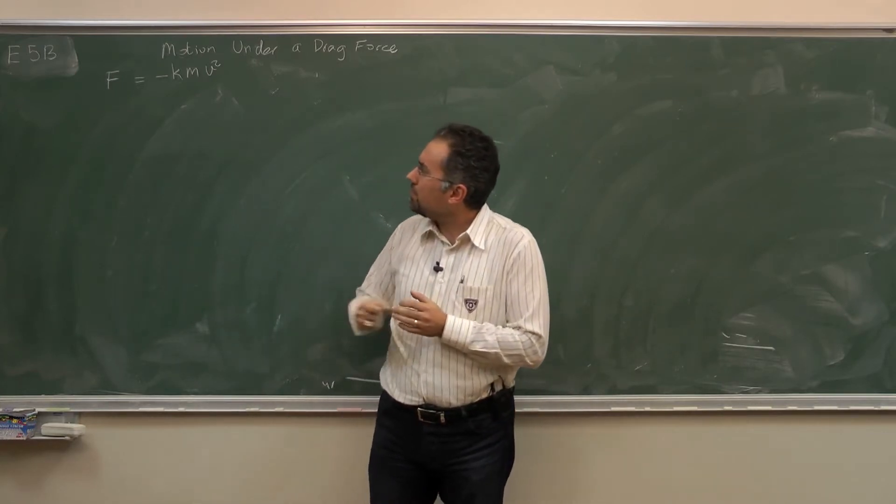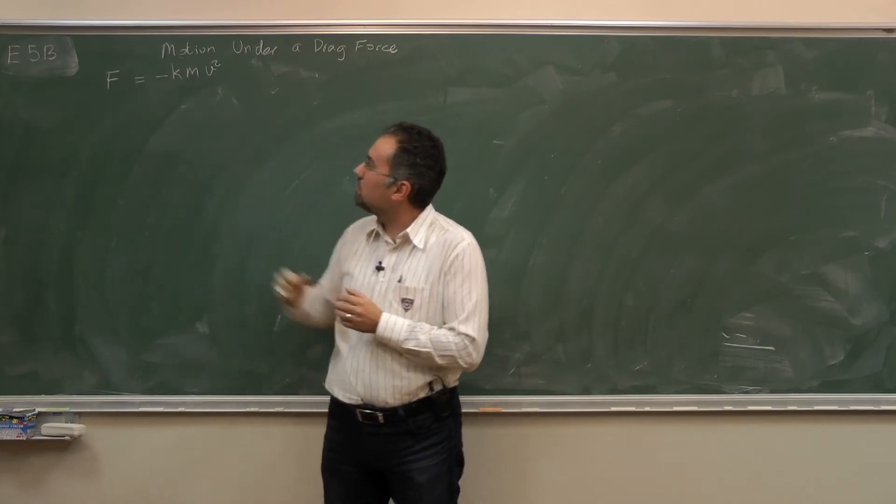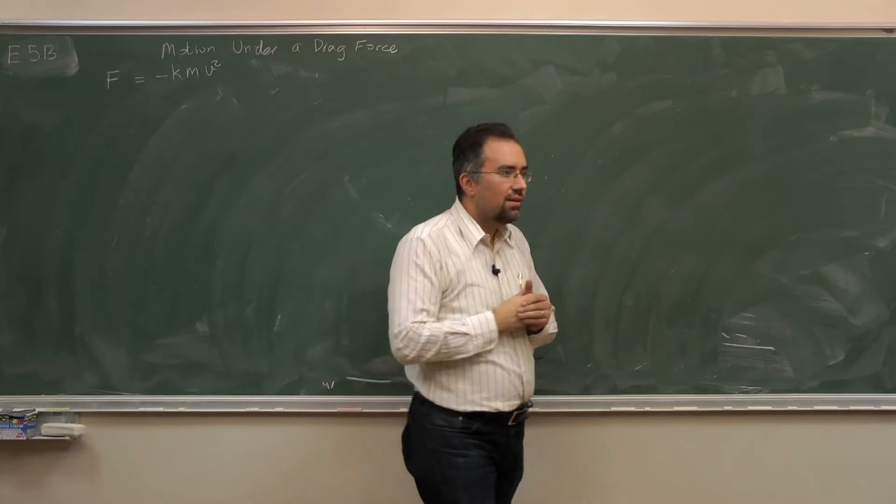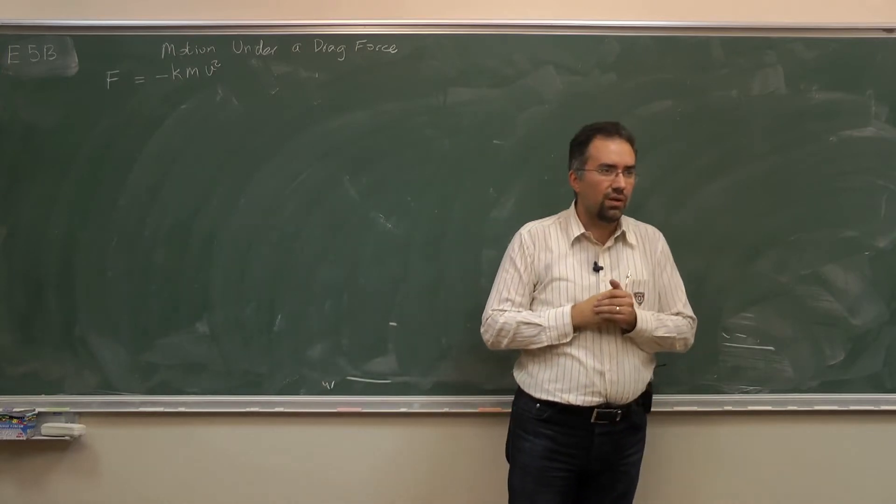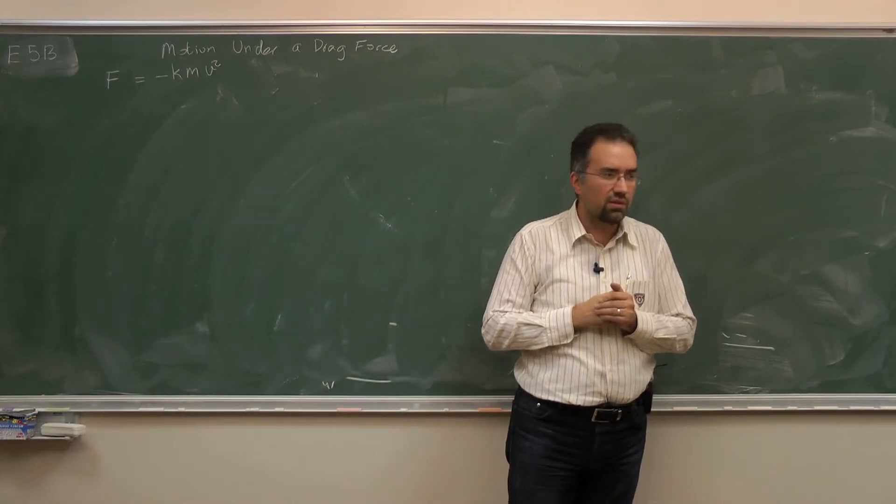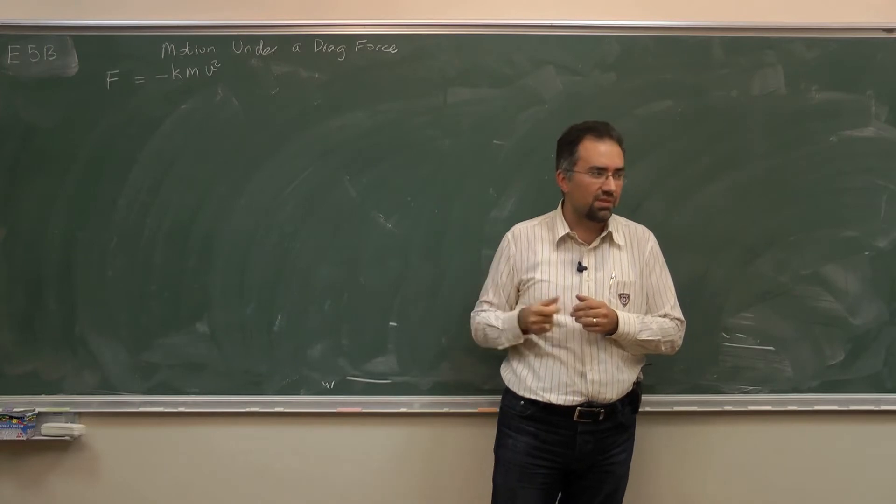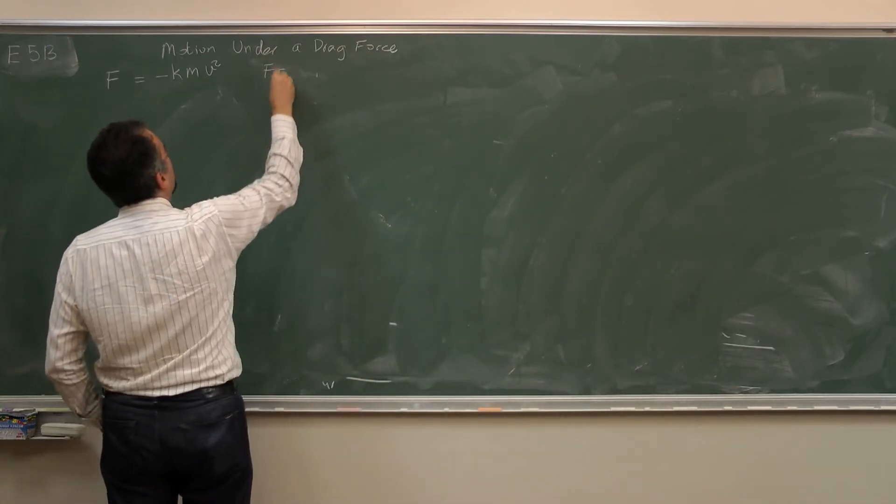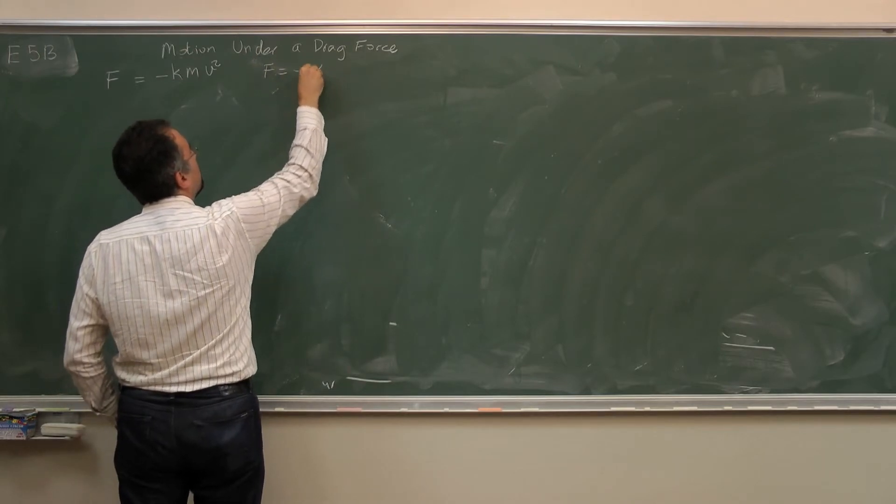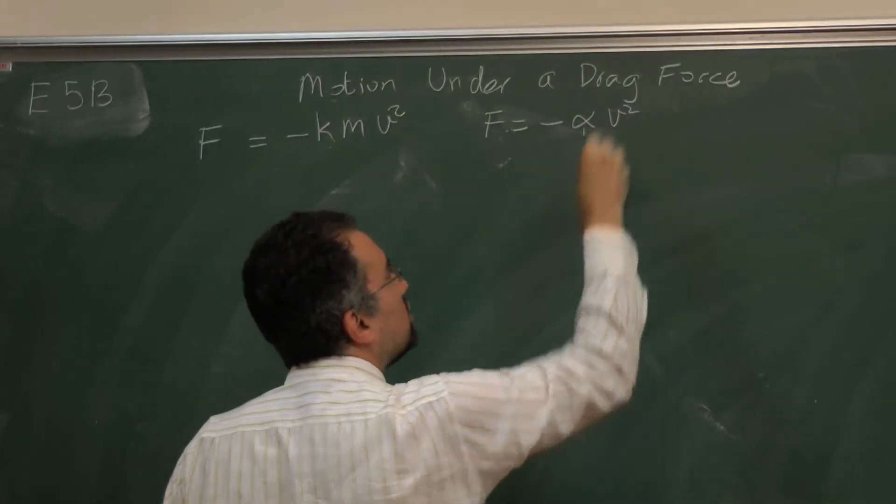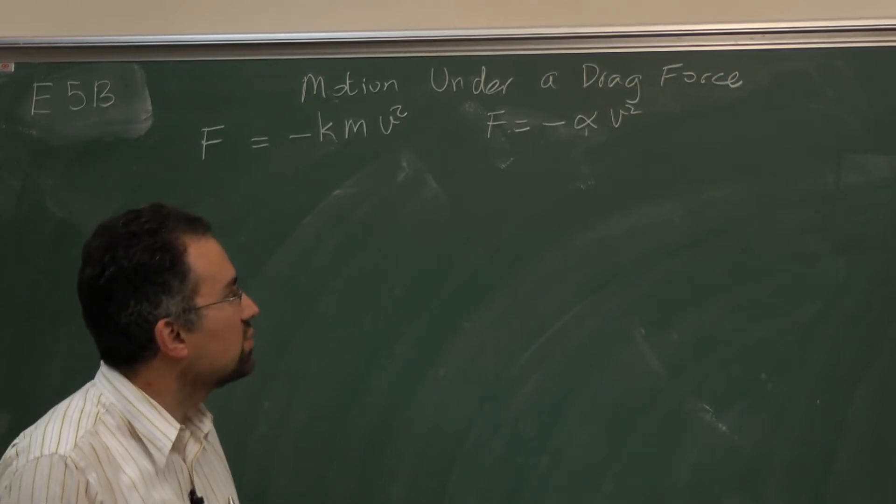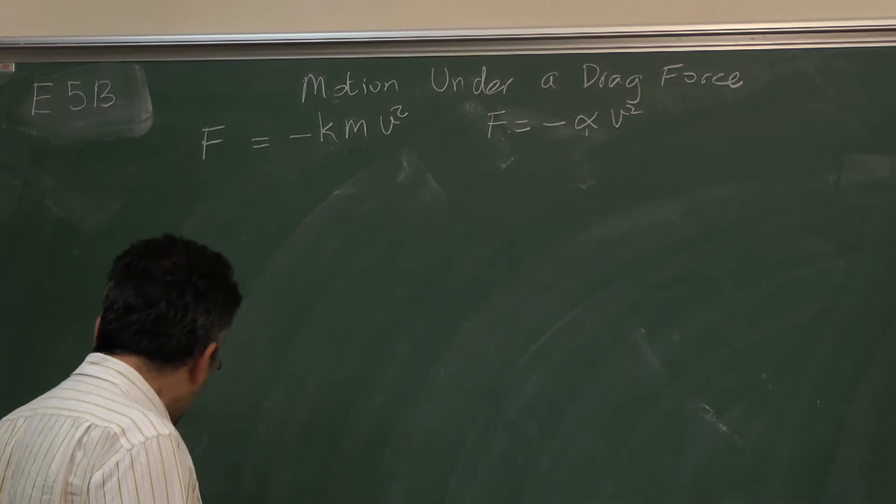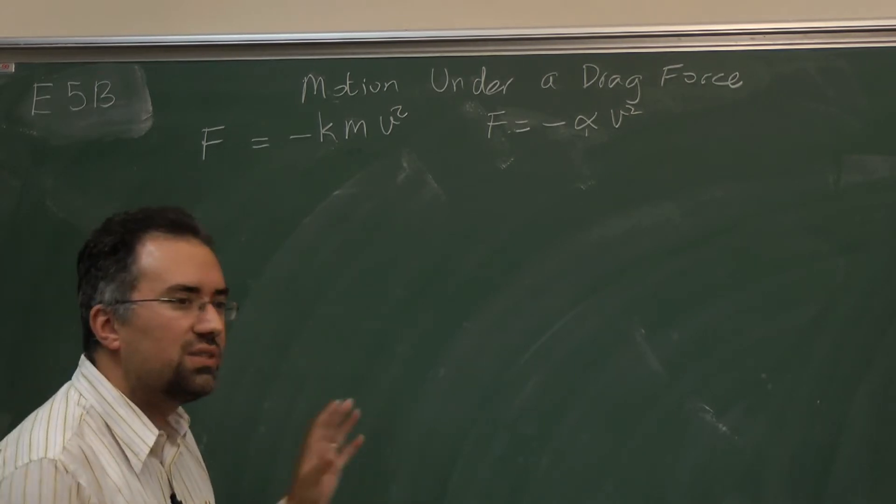Now the formula may look a little strange because it involves the mass. M is there essentially to make the notation simpler. Normally I could have stated this as minus another constant times v squared. The M is there so that the solution will look nicer.